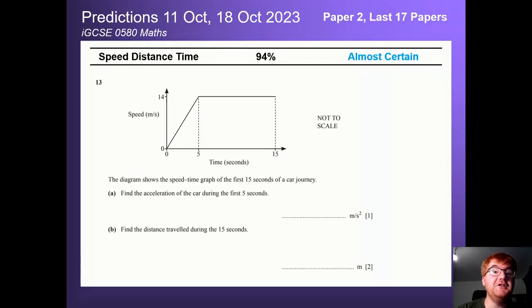Hello and welcome to another Ginger Math Petition video. This is going to be my video going through the predictions for the IGCSE 0580 maths course for the exams on the 11th of October for Paper 2 and the 18th of October for Paper 4. My predictions are bigger and better than ever. I have taken the last 17 papers compared to about 12 or 13 in previous videos. I'm going to go through first the almost certain and certain topics because those are the ones you want to focus your revision on first.